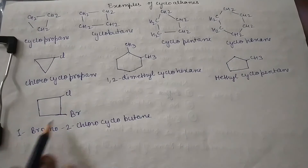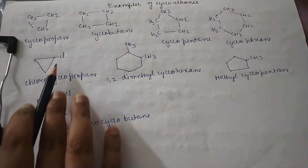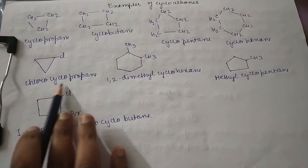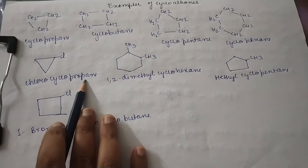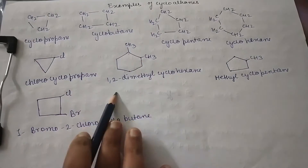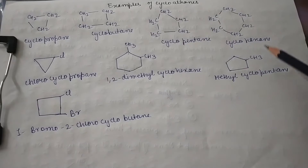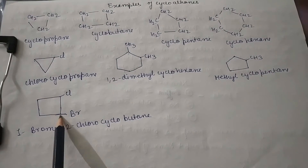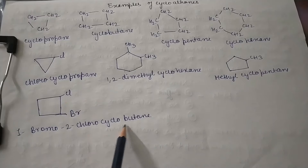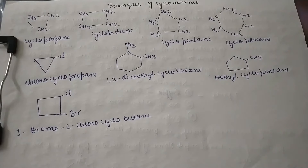These are the examples of substituted cycloalkane derivatives: chloro-cyclopropane, 1,2-dimethylcyclohexane, methylcyclopentane, and 1-bromo-2-chlorocyclobutane. These are the examples of cycloalkane derivatives.